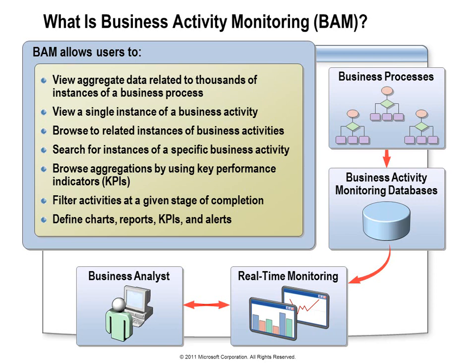BAM allows a user to view data at a very high level, looking at aggregations that summarize thousands of transactions, and also has the capability to drill all the way down into a single instance of the business process. It gives users a way to present that data in whatever format is most appropriate — whether charts, reports, or updates to key performance indicators. You can even configure BAM to send out alerts when certain conditions are met based on the BAM data. For example, you might want to send out a notification if the average duration of an order process exceeds some given threshold.